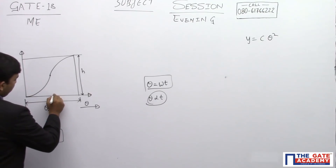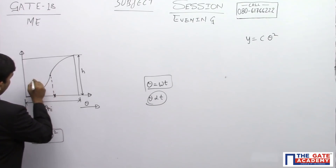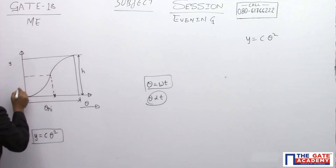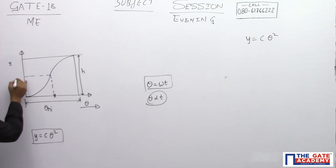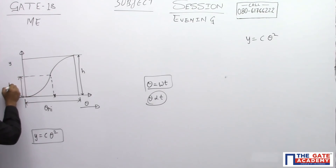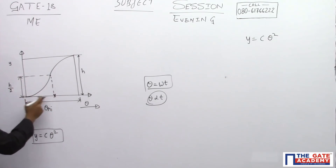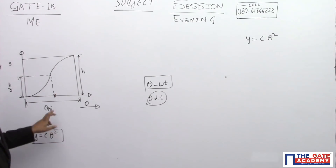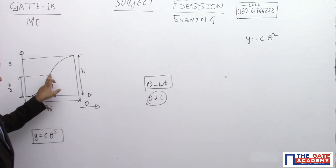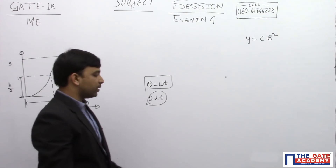When theta equals theta_ri divided by 2, at the midpoint of the raise, velocity will be maximum. At this midpoint, the displacement of the follower is h/2. When theta equals theta_ri, displacement of the follower equals the full lift h. So maximum velocity occurs when theta equals theta_ri/2, and we need to calculate the velocity at that point.